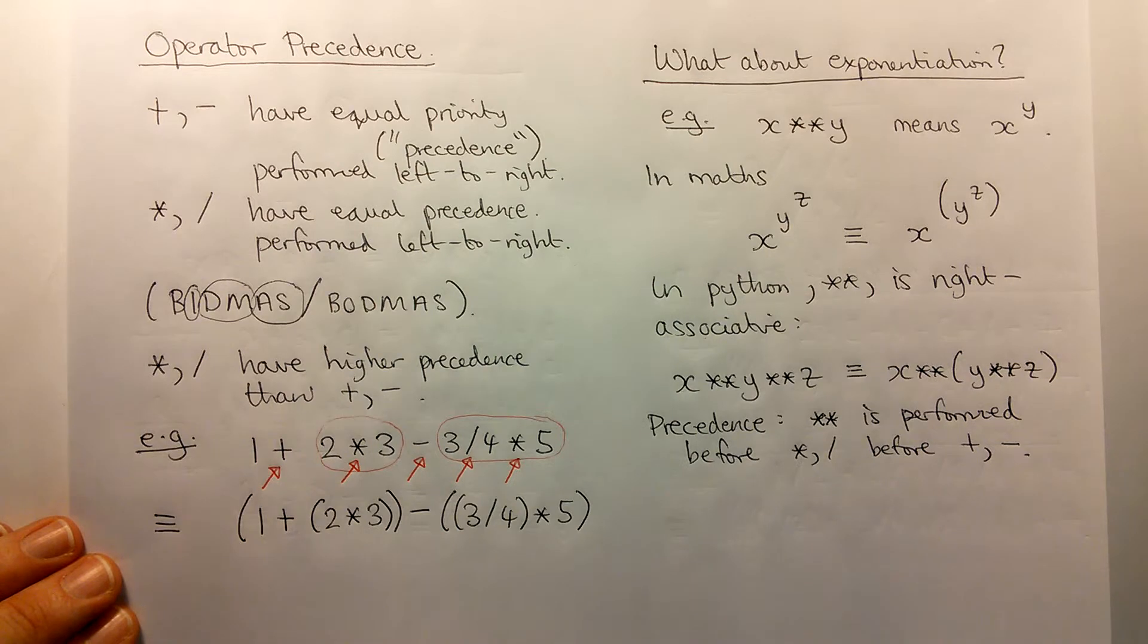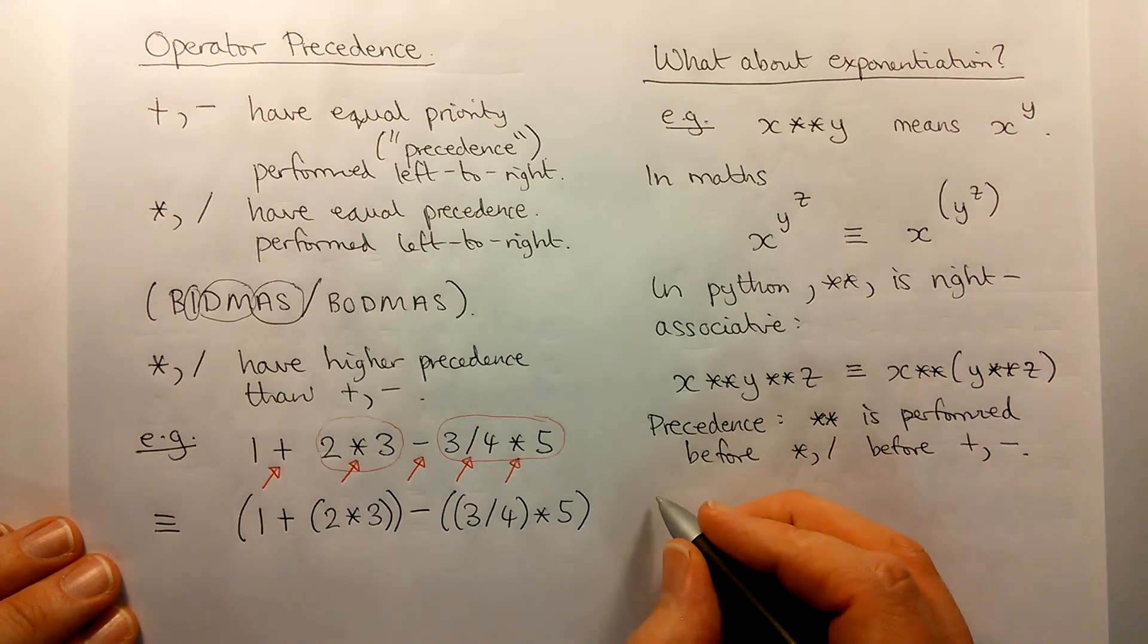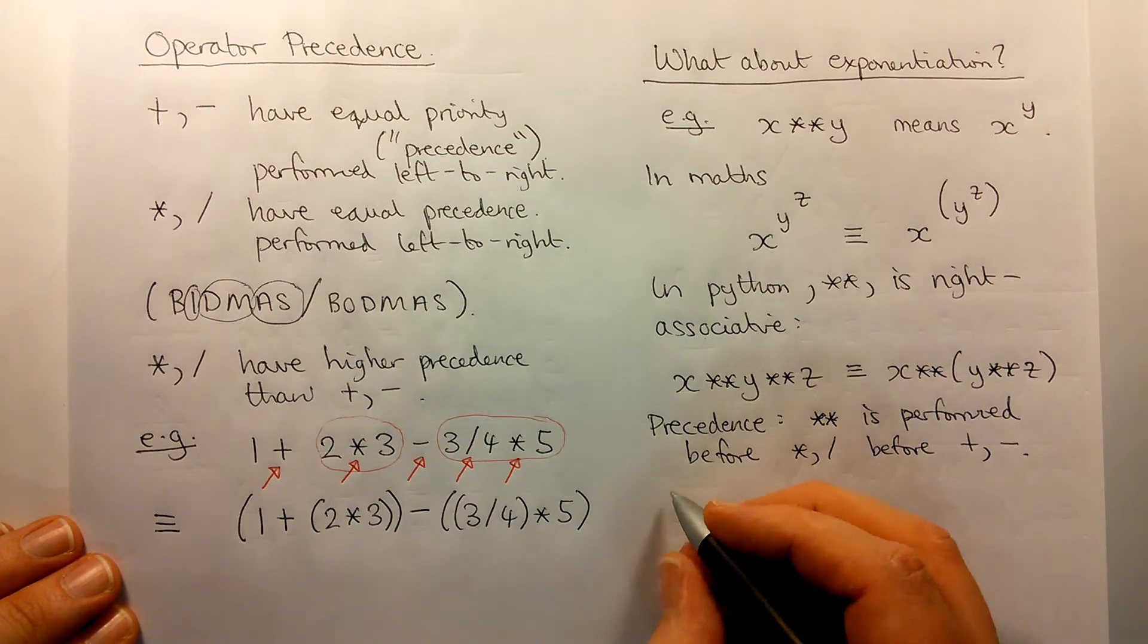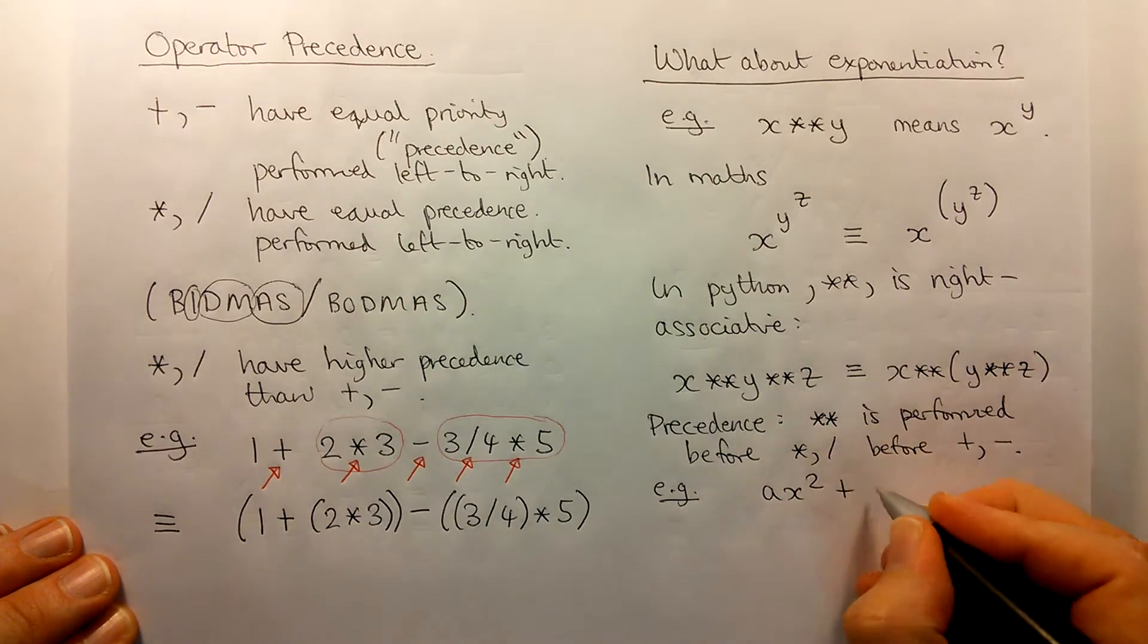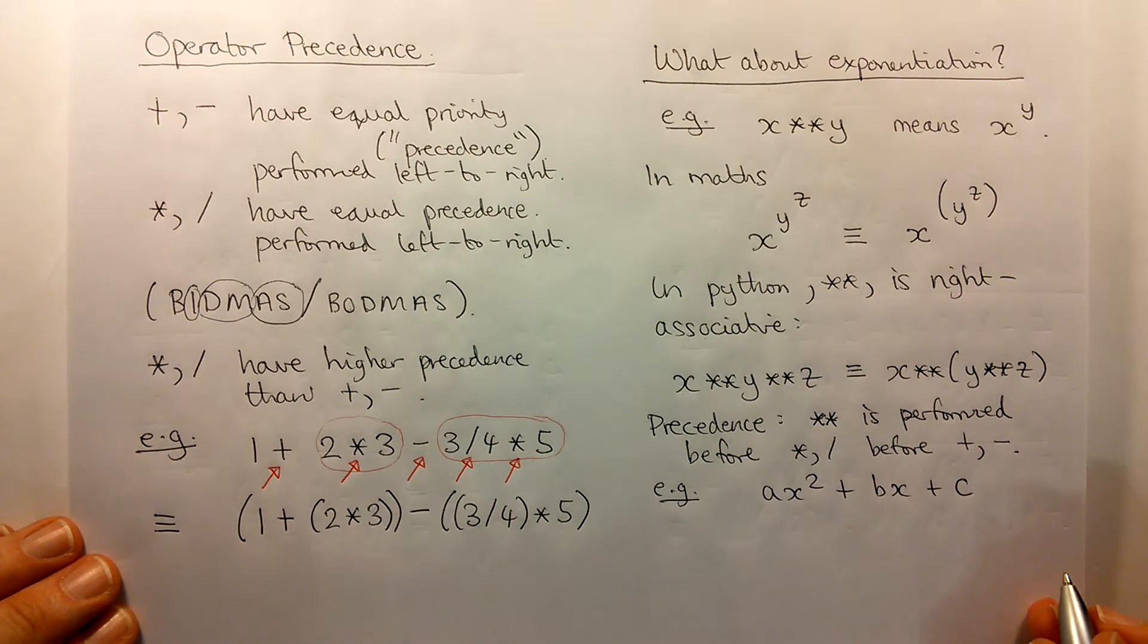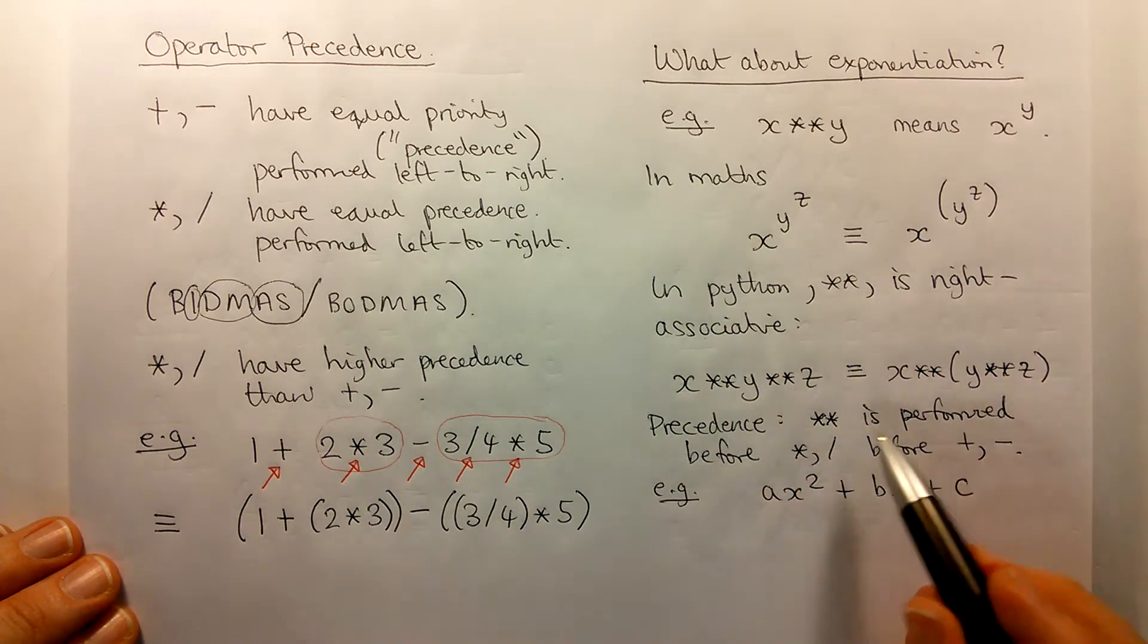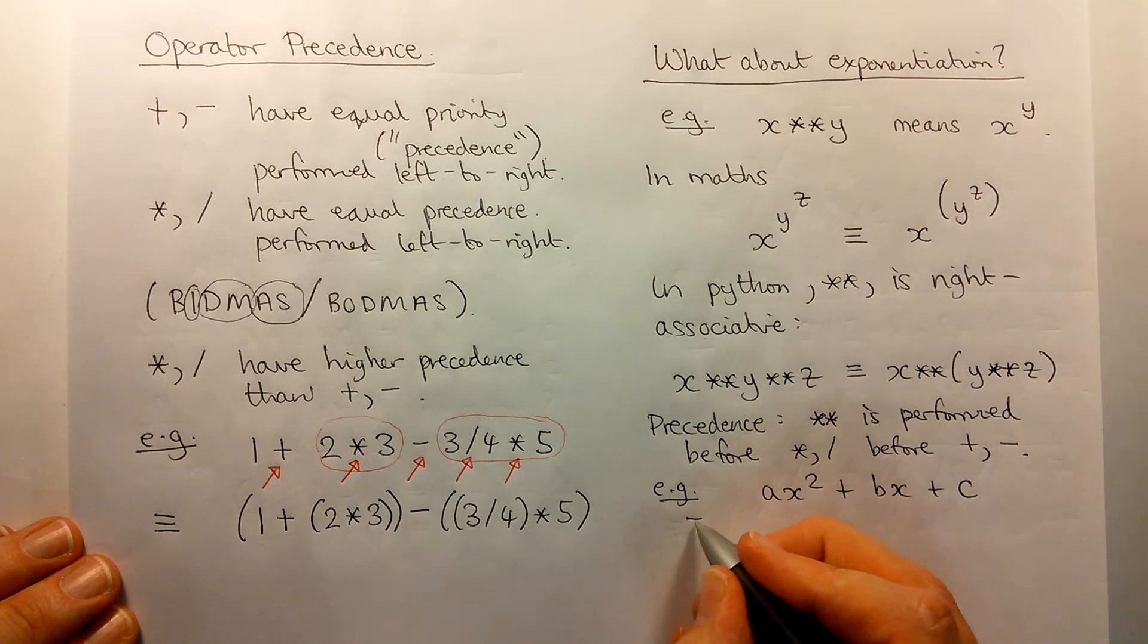So we perform all of the exponentiations first. Now this is pretty useful because it means that when we write down an expression like the following, that's an example of a quadratic expression, we don't need to put any extra brackets in, in order to get the meaning that we intend. Because automatically, because of these precedence rules, the squaring gets done first.